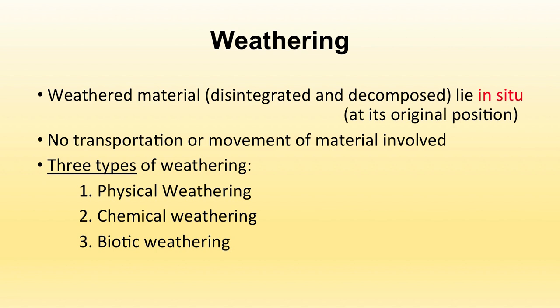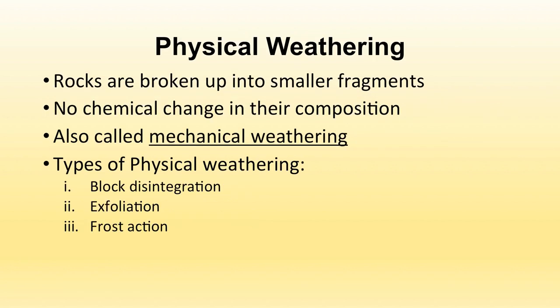When transportation occurs, it is different from weathering. There are three types of weathering: physical weathering, chemical weathering, and biotic weathering. Physical weathering means breaking up of rocks into smaller fragments with no chemical change involved, which is why it is also known as mechanical weathering. There are different types: block disintegration, exfoliation, and frost action.